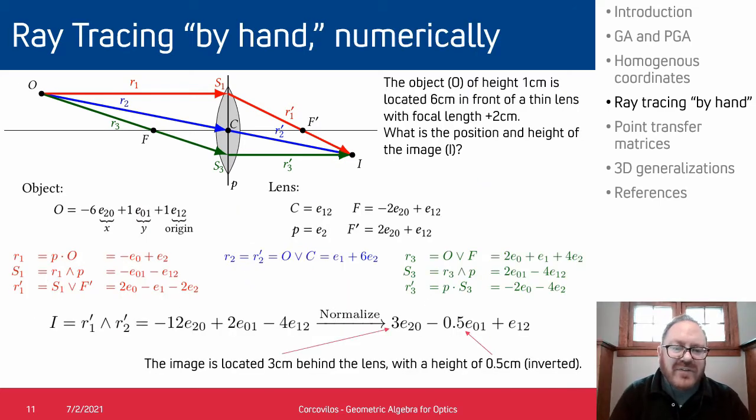Point—and we can insert numbers here so you can see how that works out. The key point here is at the end of the day we get a bivector for the image, and then if we normalize that bivector we can read off the location of the image and its height.